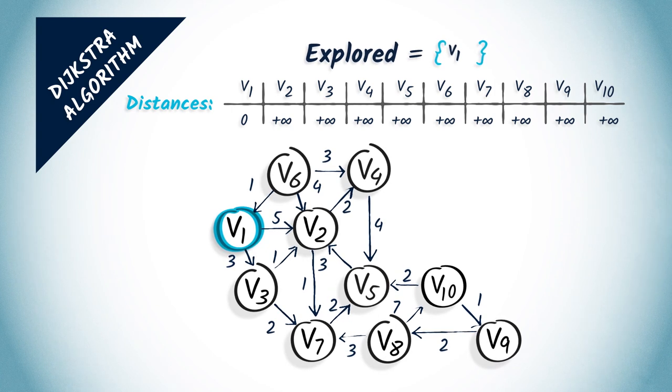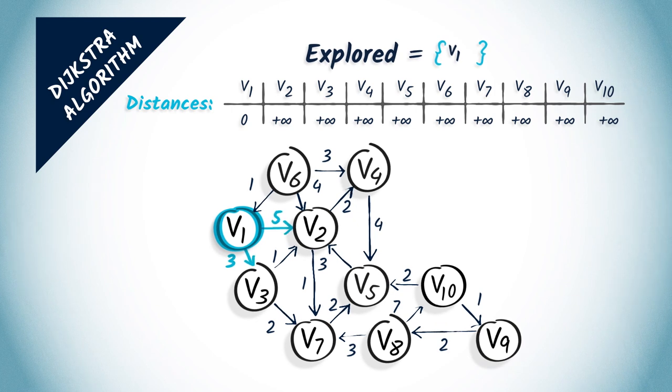Here, v1 has two neighbors, v2 and v3. Reaching them in one hop from v1 costs 5 and 3, respectively. So, we update our distances from v1 by saying that v2 is at distance 5, and v3 is at distance 3.